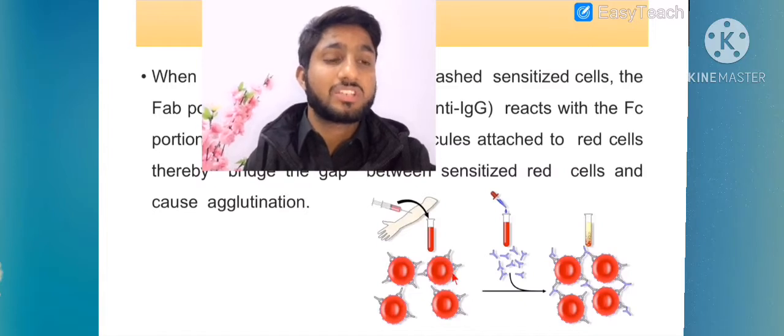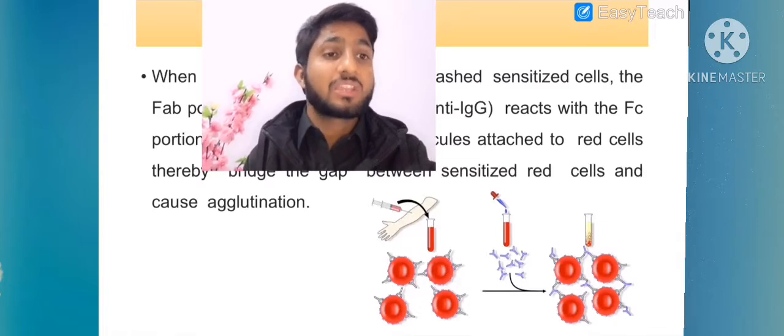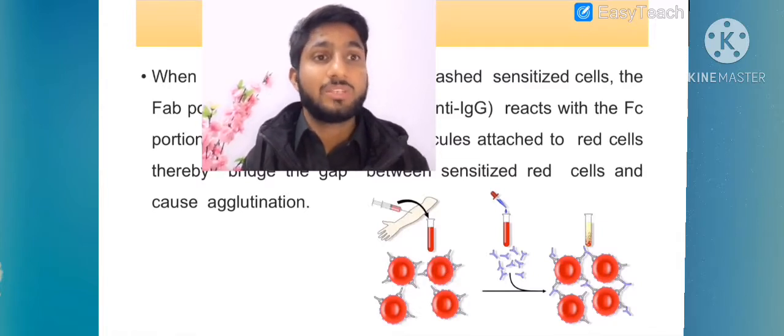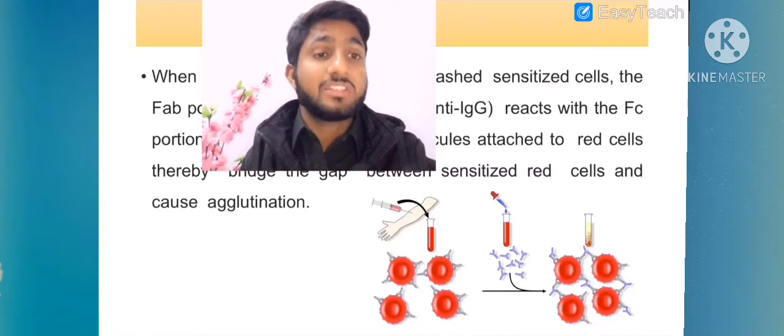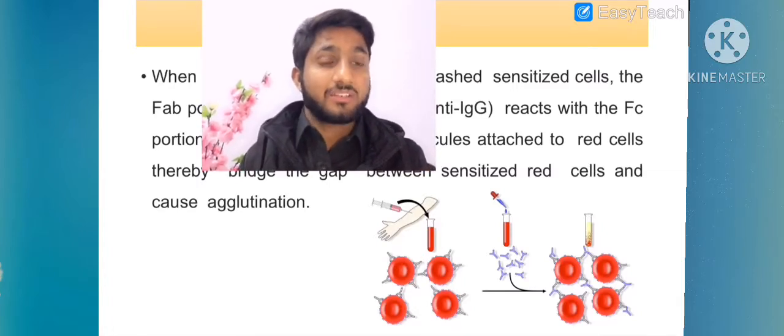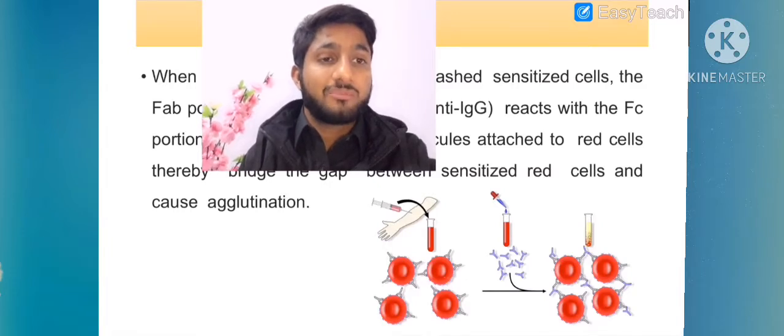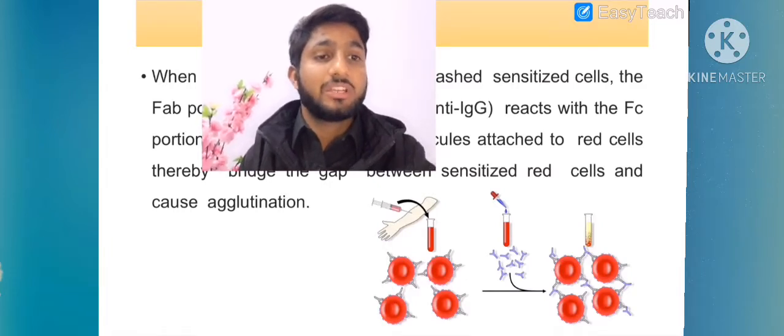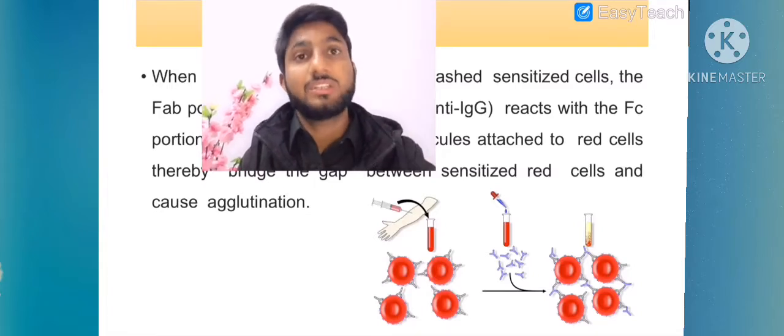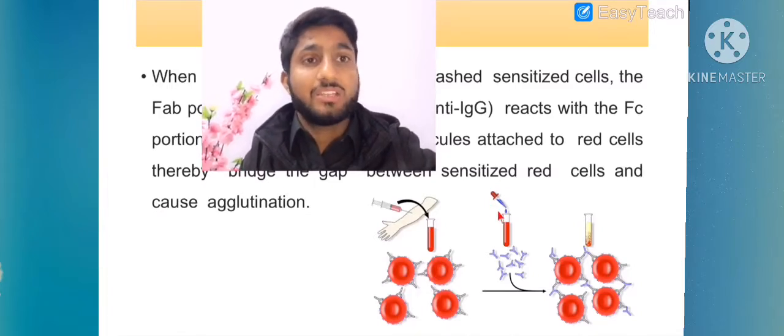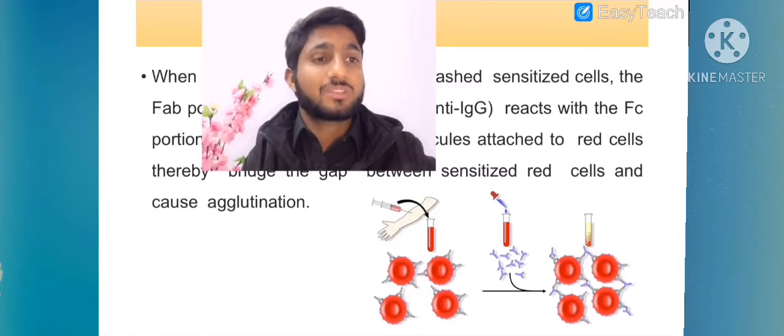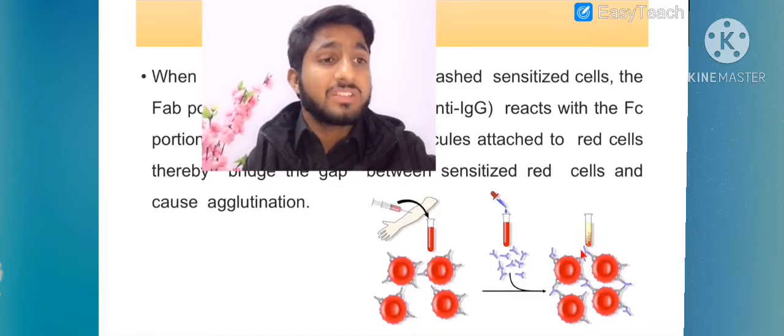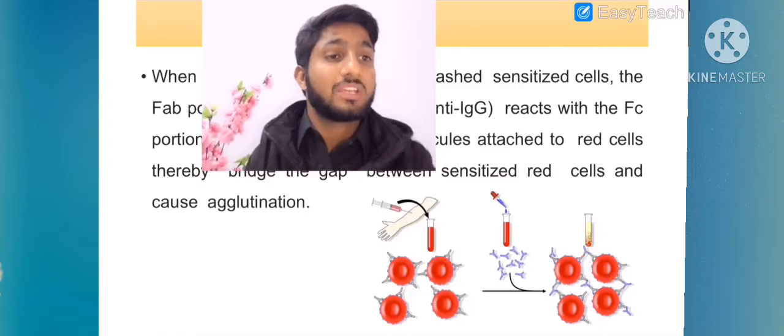This binding of IgG keeps the red cells at a certain distance due to negative charge on them. To ensure agglutination, we need to add anti-AHG protein. The anti-AHG will bind both FC regions, which are the catalytic regions. These two antibodies' FC regions facilitate the agglutination process.